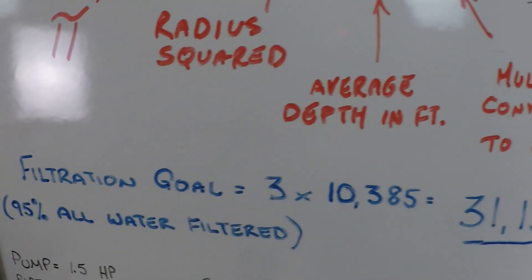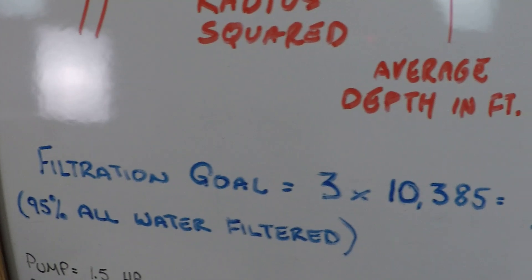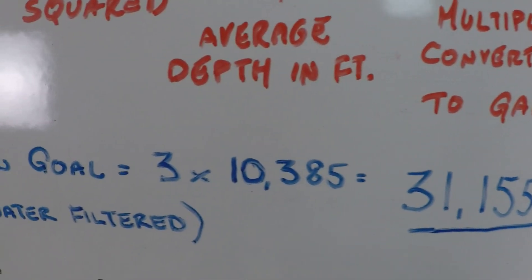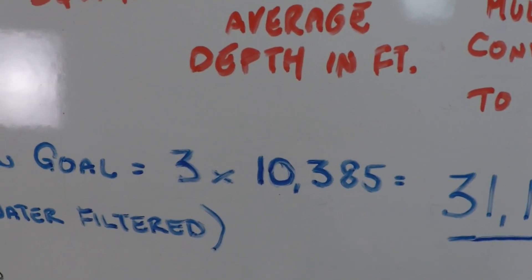That makes our filtration goal 31,155 gallons, and that is 3 times the volume of the swimming pool.